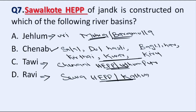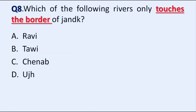Our next question is: which of the following rivers only touches the border of Jammu and Kashmir? Option A: Ravi, B: Tawi, C: Chenab, D: Aj. Correct answer is Option A, River Ravi. River Ravi flows only through the border of Kathua district.